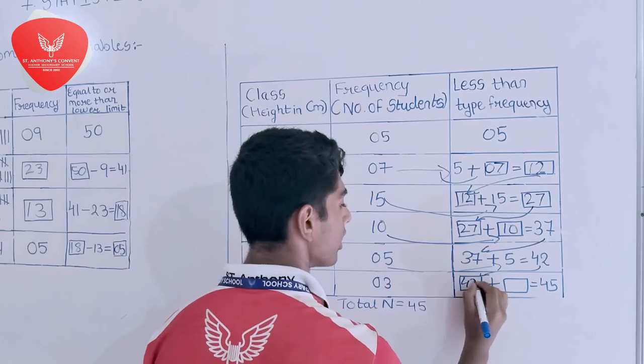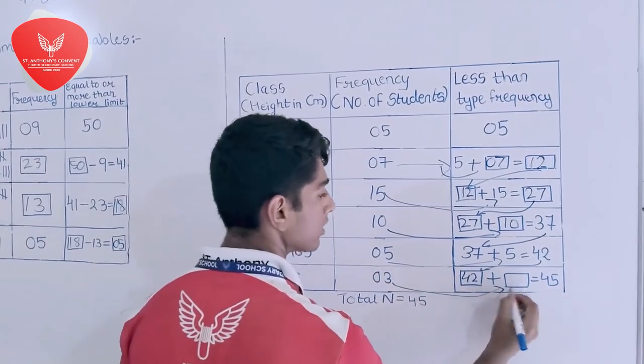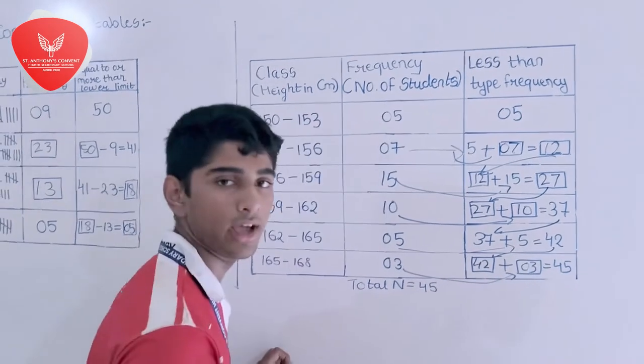This 42 will come over here. 42 plus 3, this 3 will come over here. 42 plus 3 is equal to 45.